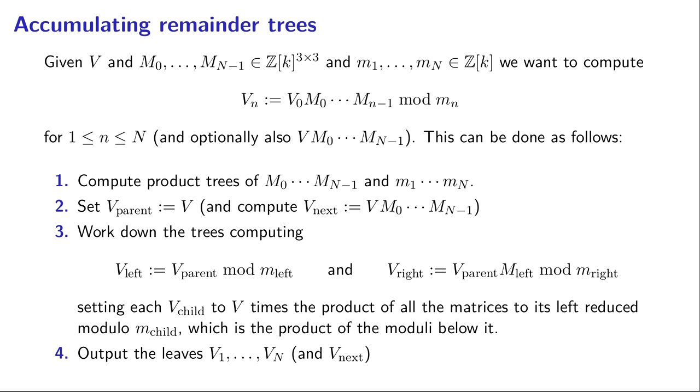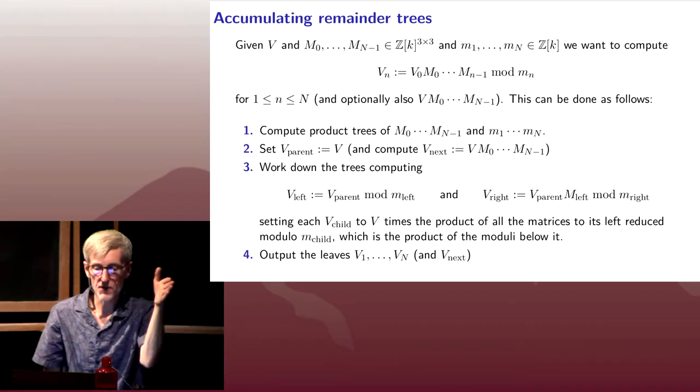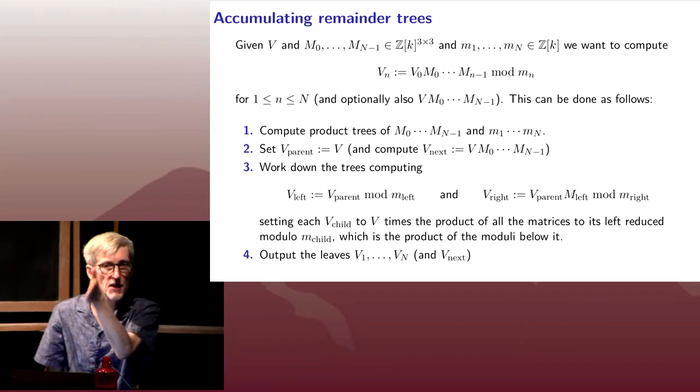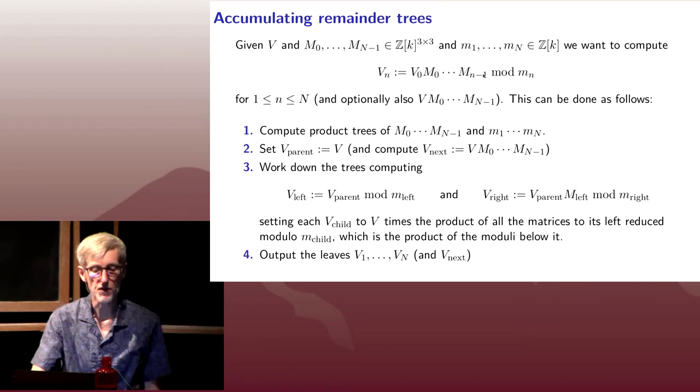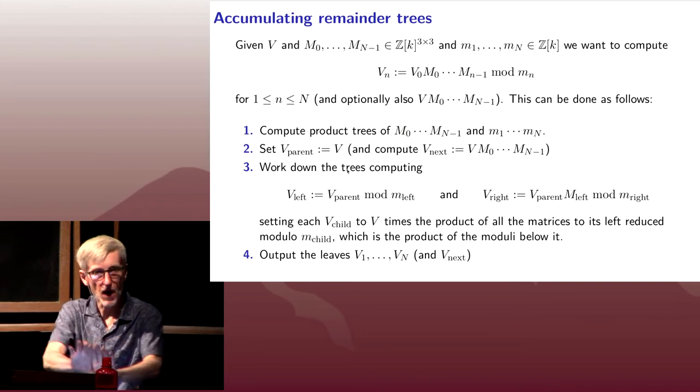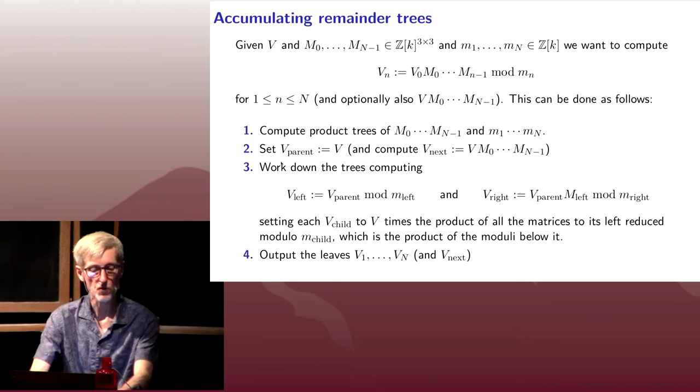And at each stage we're going to be reducing modulo the modulus that's at our point in the tree. And so rather than trying to write out a very complicated expression of indices, just imagine you have at any local point in the tree you have a parent and you have two children, a left and a right child.